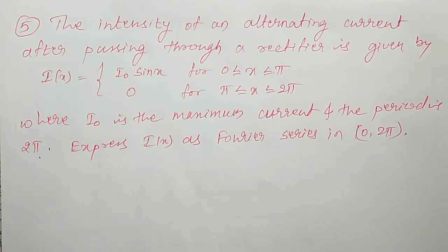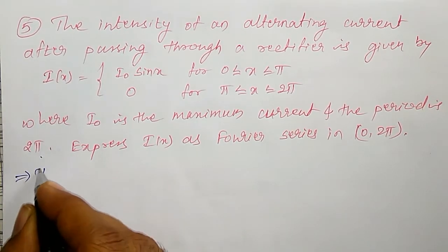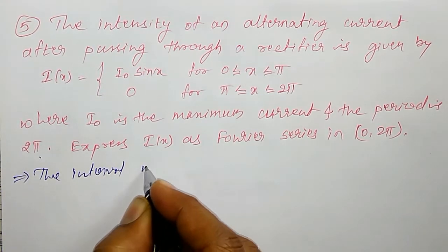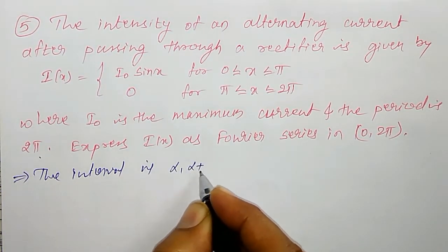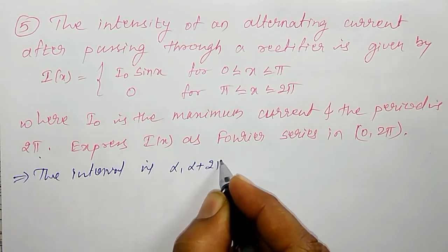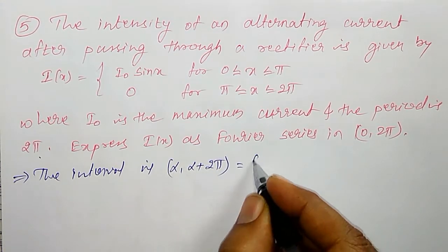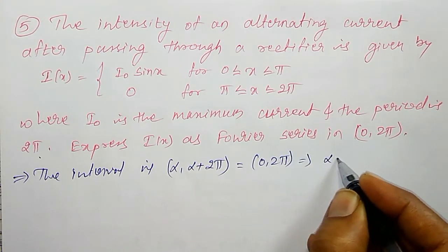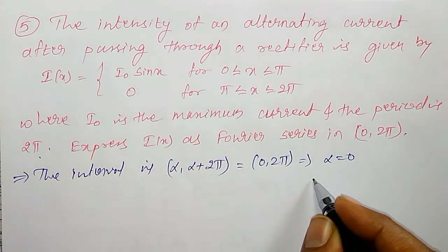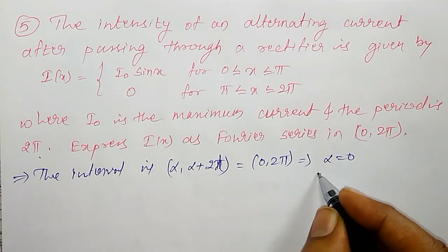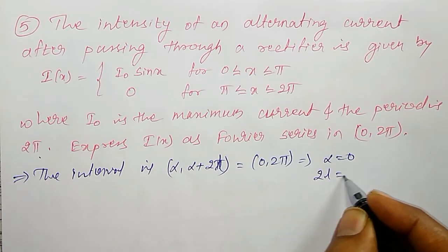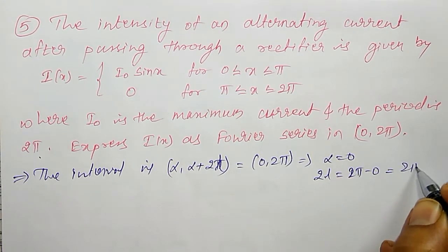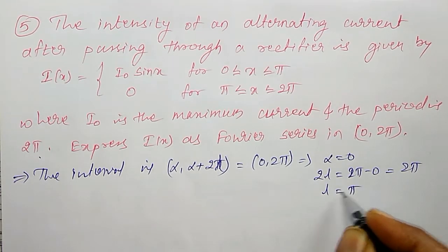First of all, the interval is α to α + 2π, which is 0 to 2π, so α = 0. And 2l = 2π − 0 = 2π, therefore l = π.